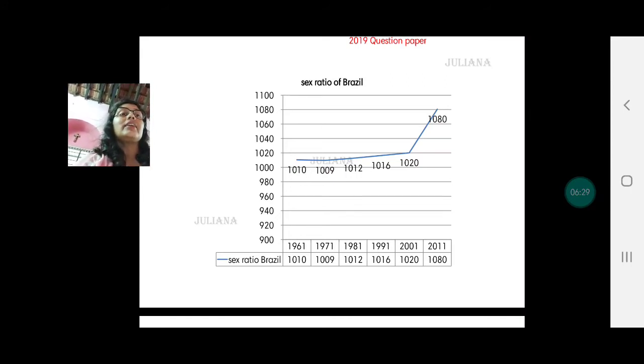What does that mean? In 2011, for every thousand males there were 1080 females. That means the sex ratio is very high. Female population is very high in Brazil. And right from 1961 we have seen it rising: 1010, 1012, 1016, 1020 and 1080. So sex ratio has been increasing in Brazil. That means female population has been increasing.